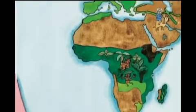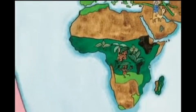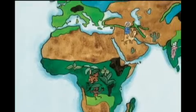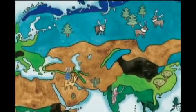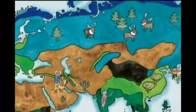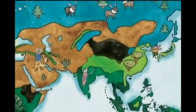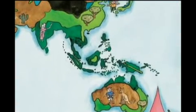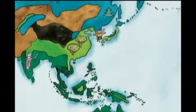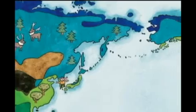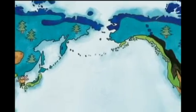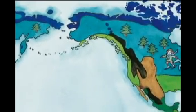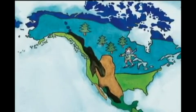Why is the climate different in each part of the world? That is because the earth we live on is round. So, how much sunlight an area gets is different. The area that gets the most sunlight is warm, and the area that gets the least sunlight is cold.